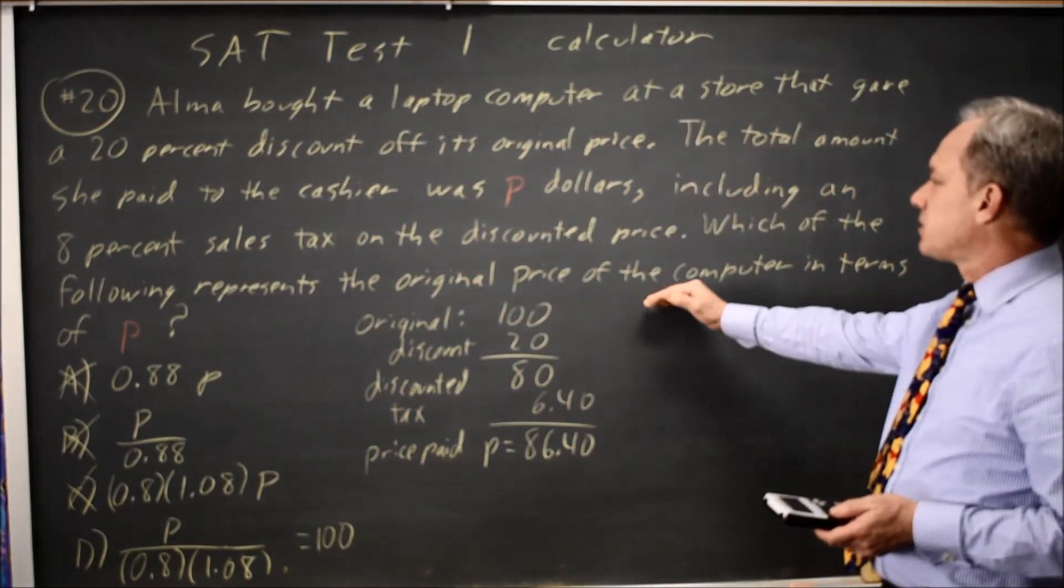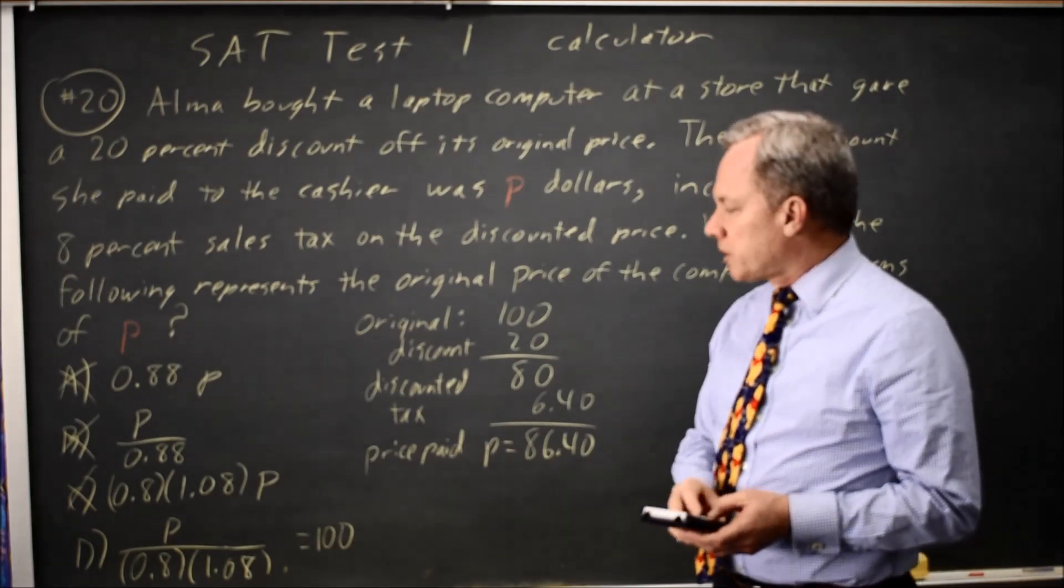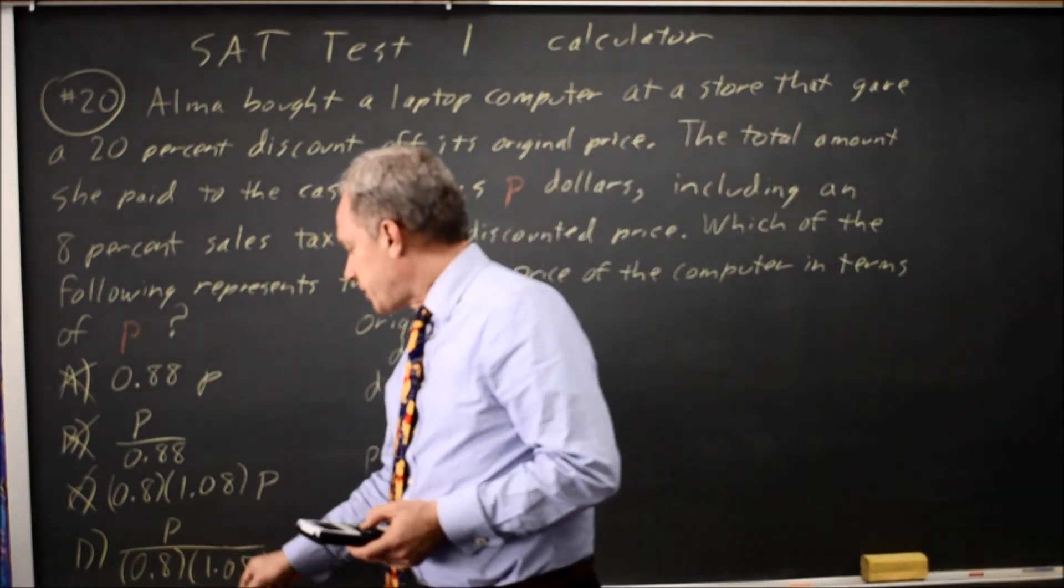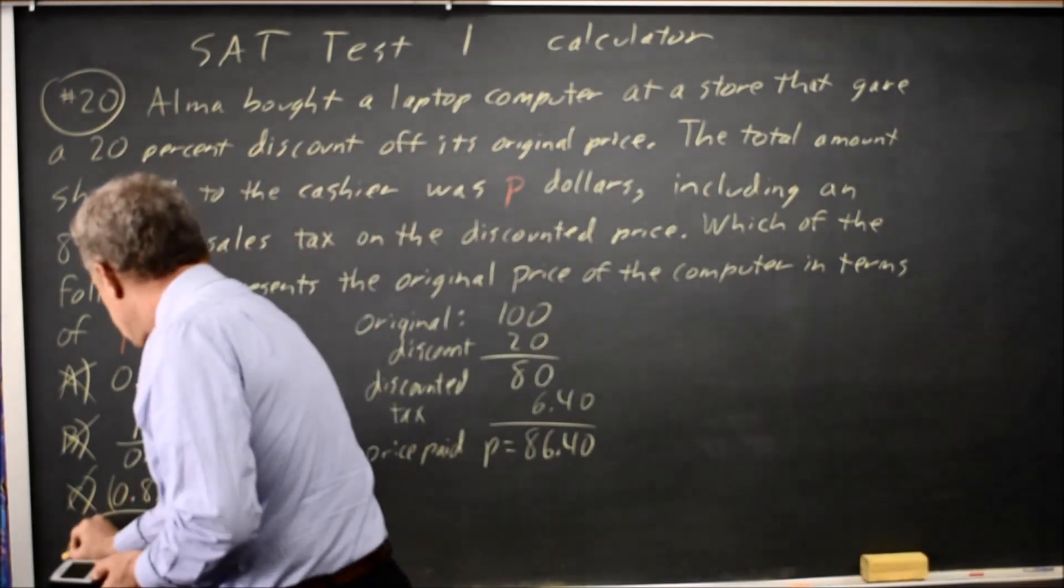They're saying which expression gives us the original price, so D would be correct. Or I could take 86.40, divide by .8, and then divide that answer by 1.08. They both tell me that choice D is correct.